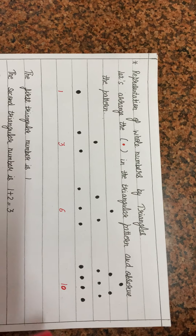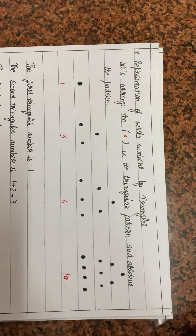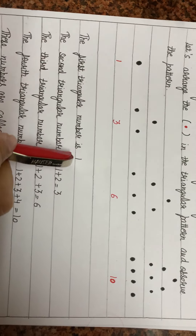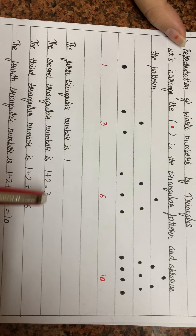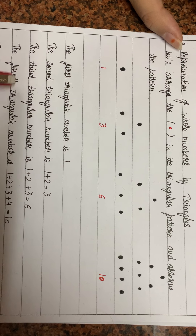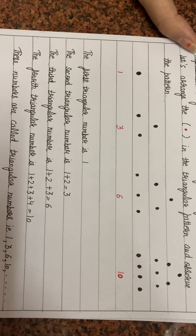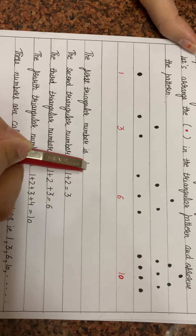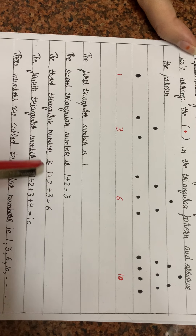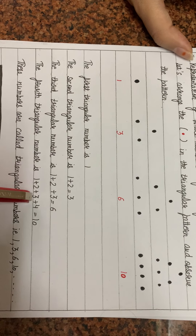These numbers are called triangular numbers: 1, 3, 6, 10. The first triangular number is 1. The second triangular number is 1 plus 2 equals 3. The third triangular number is 1 plus 2 plus 3 equals 6. The fourth triangular number is 1 plus 2 plus 3 plus 4 equals 10.